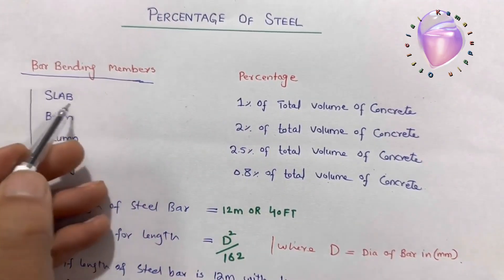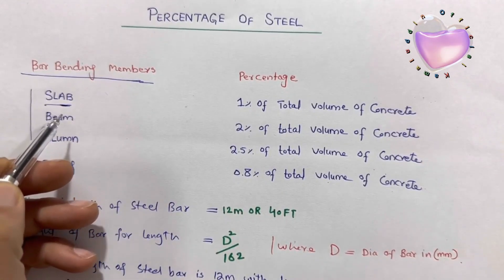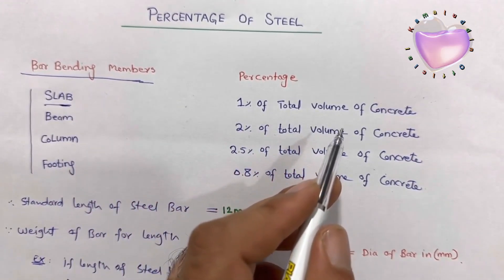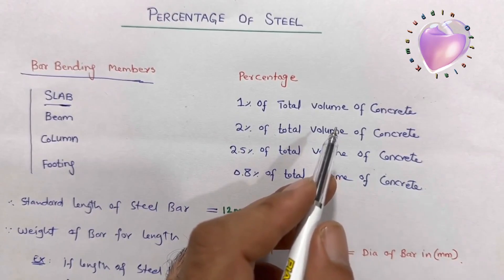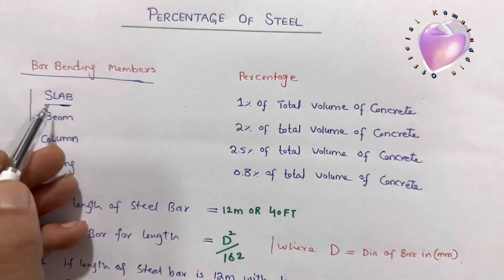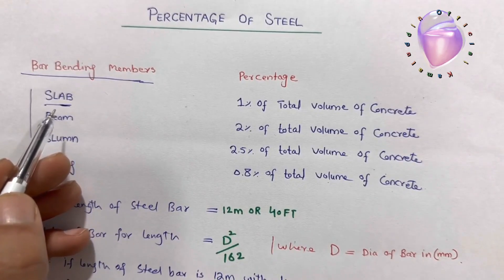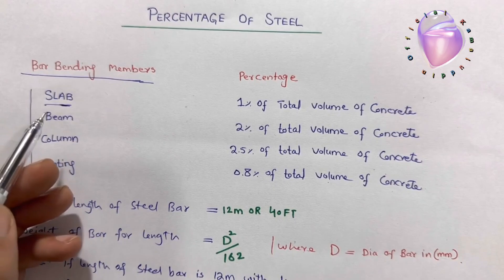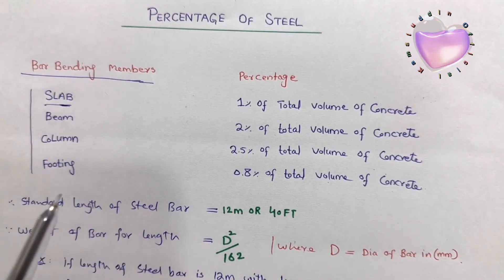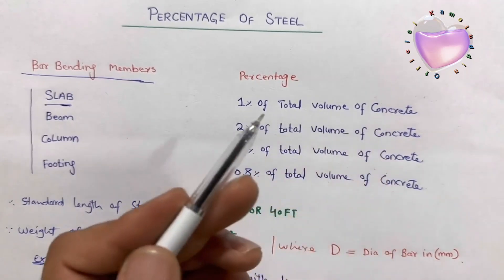In bar bending members, the slab is an RCC structure. For a slab, you can use one percent of the total volume of concrete. It means if the slab concrete volume is anything, one percent of that volume is steel. These values come from the thumb rule, and you can also use BN data recommendations for more accurate values.